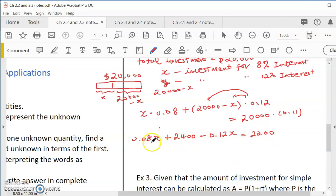And then we would combine like terms. So 0.08x minus 0.12x is negative 0.04x. And also we would minus 2400 on this side. So we have negative 0.04x equal to negative 200. So we are ready to divide by negative 0.04. So x would be 200 divided by negative 0.04. So it would be 5000.